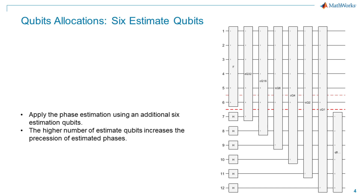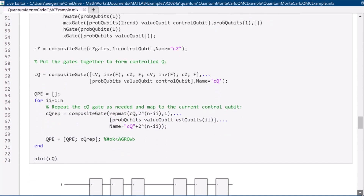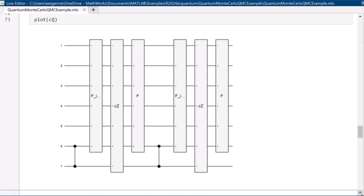Here is the third and last step: the quantum phase estimation algorithm, for which we define another six estimation qubits used to measure the phase information encoded in the value qubit. We can increase the number of qubits to increase the numeric precision of the estimated phase, as a greater number of qubits creates more precision in the binary value. This step uses a series of controlled unitary operations keeping the value qubit as the controlled qubit, and the six qubits will output the phase information from the circuit in binary at the end of computation.